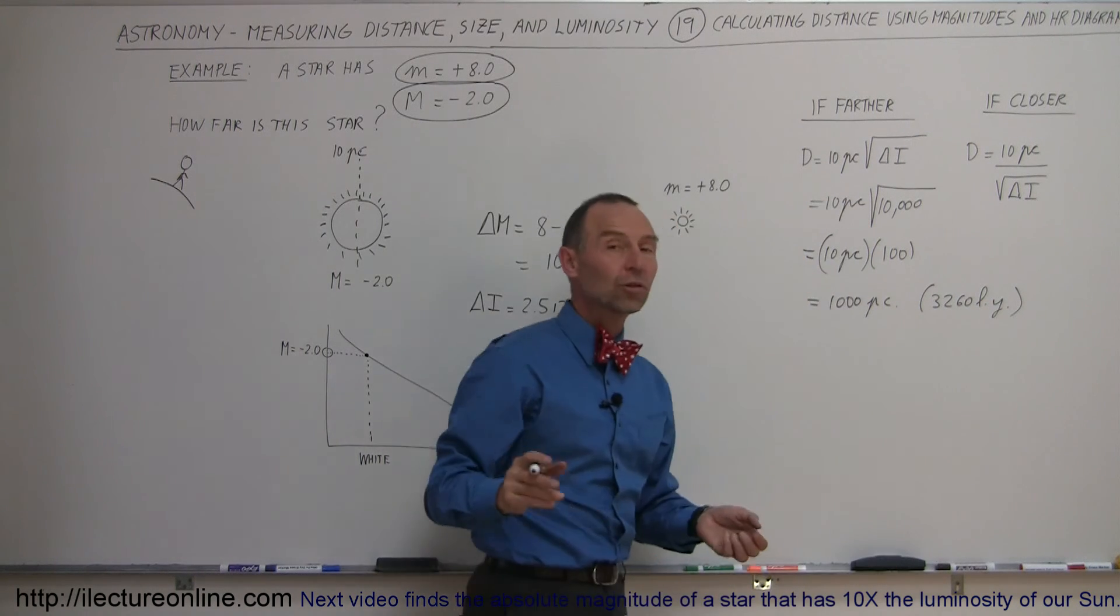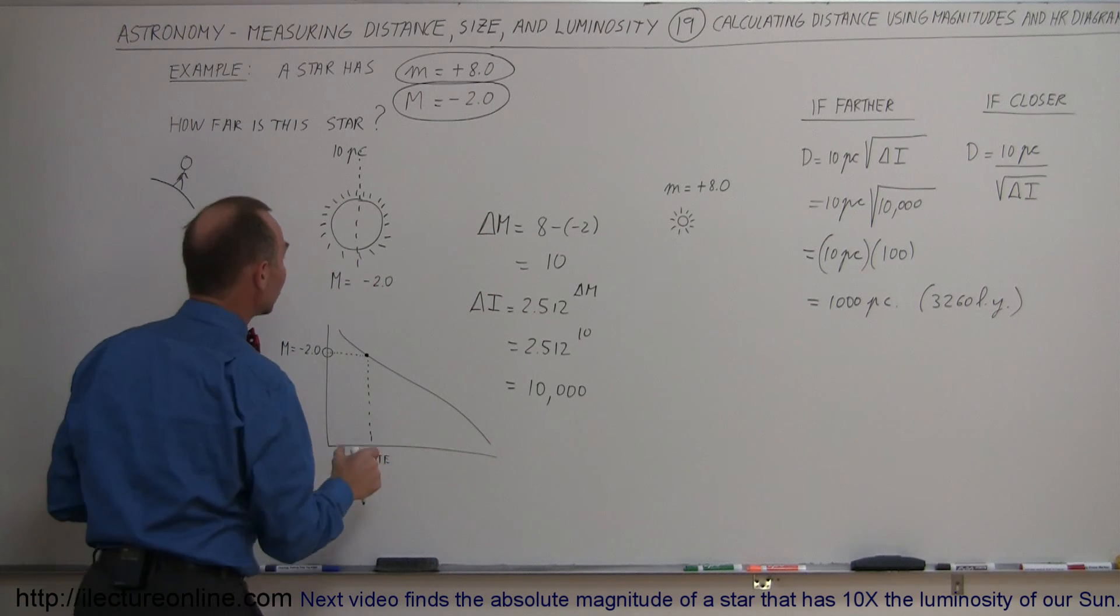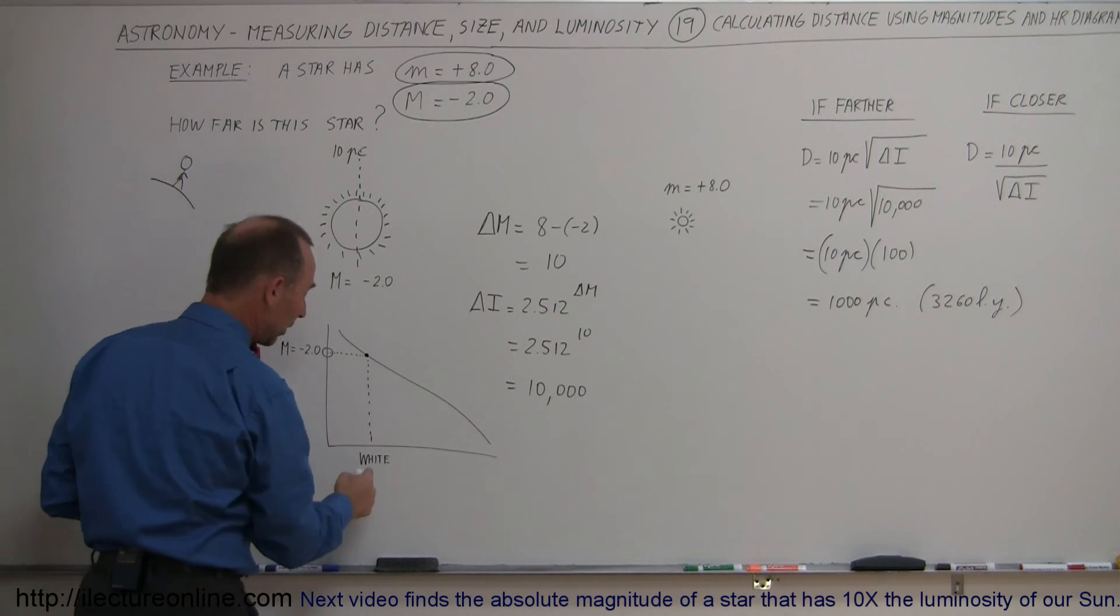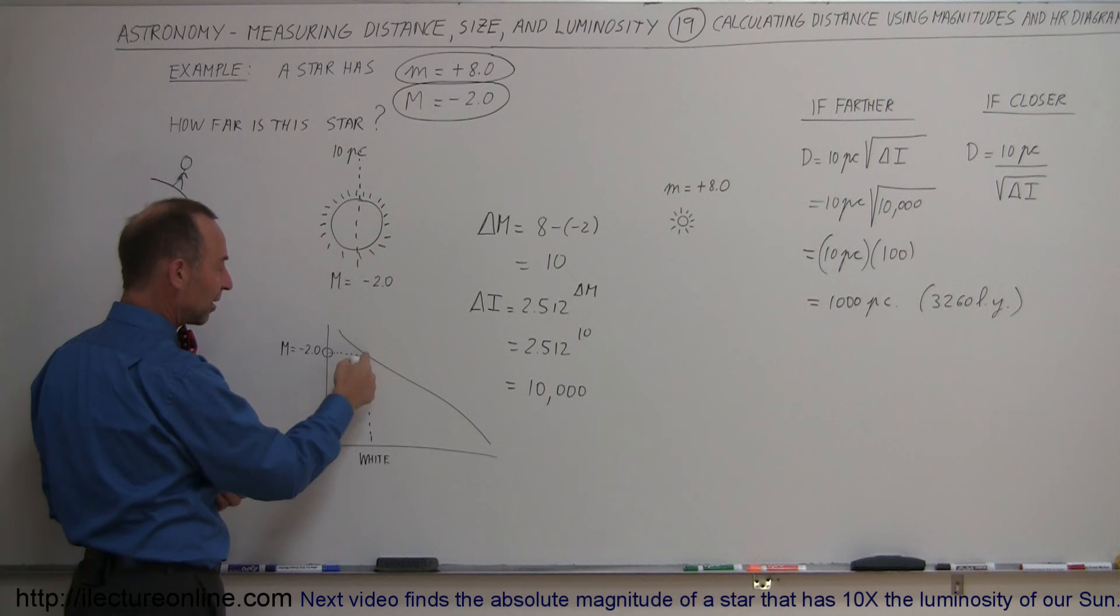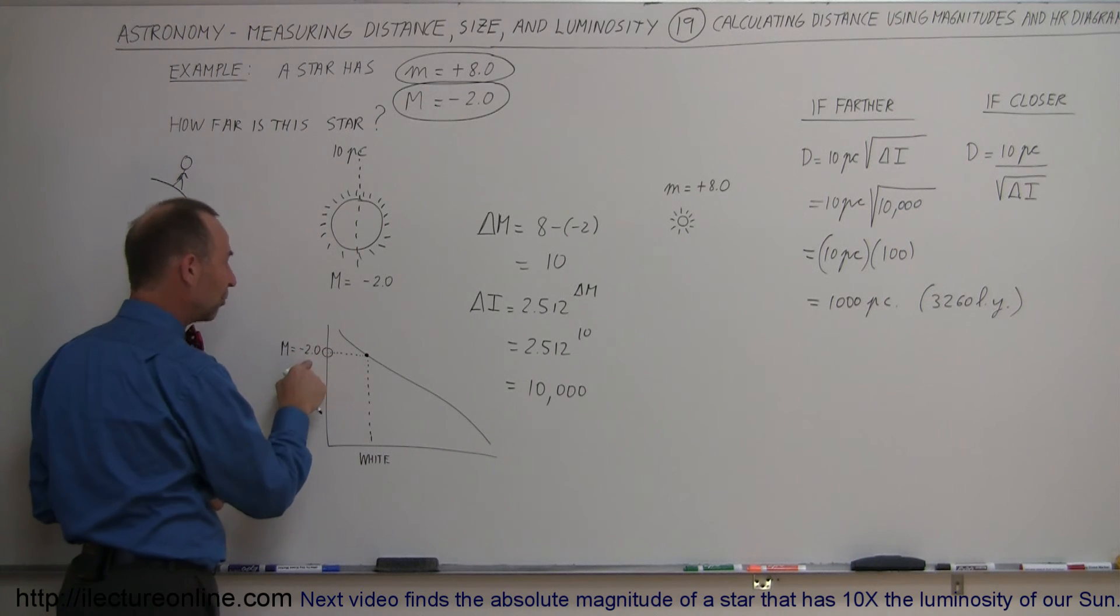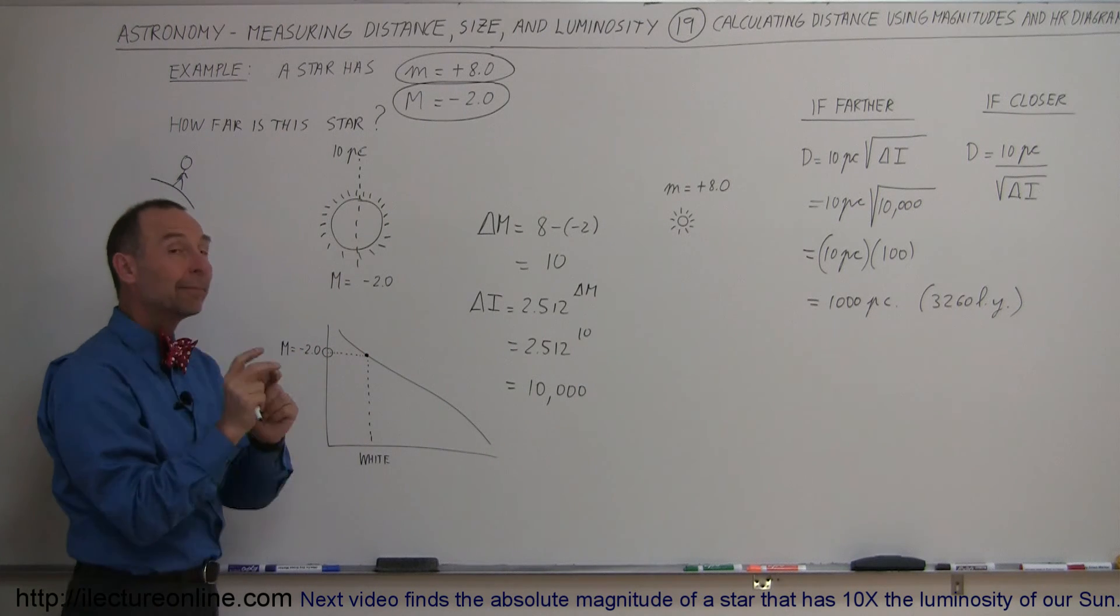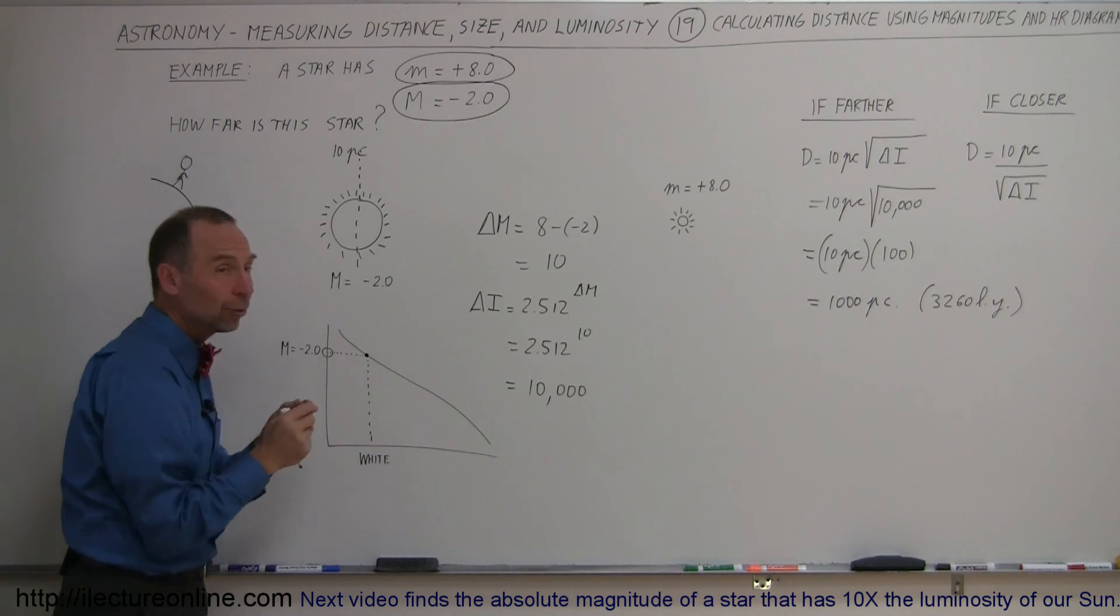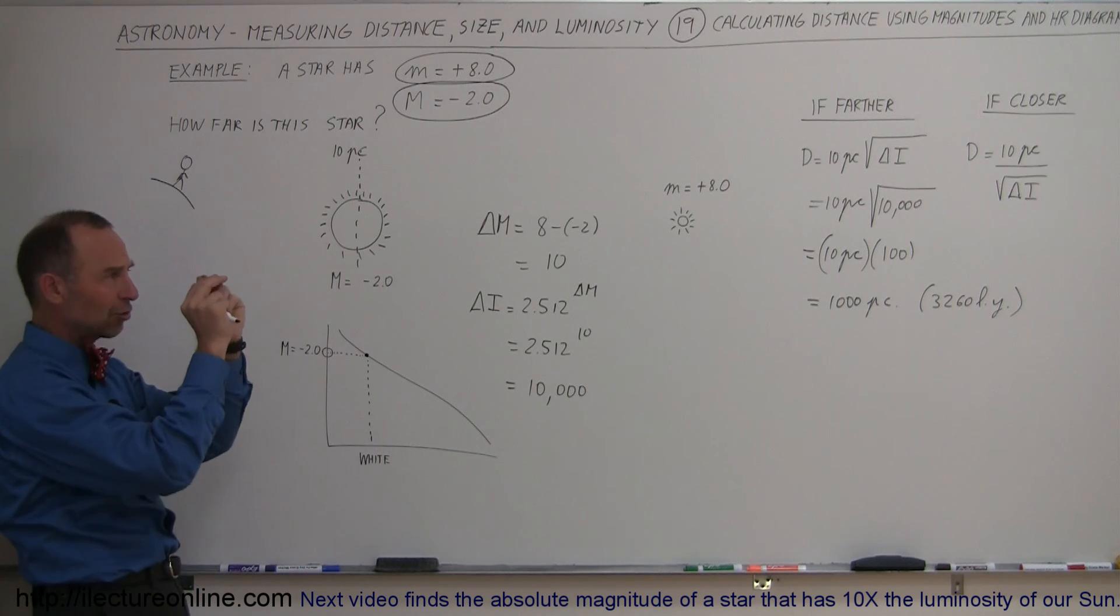So that means, with the use of the HR diagram to establish its absolute brightness, simply because we knew the color and we knew it was a main sequence star, therefore the absolute magnitude was minus 2. And then by measuring the apparent magnitude, by just taking a telescope, looking at it, measuring its brightness.